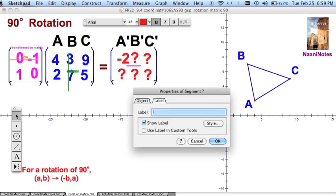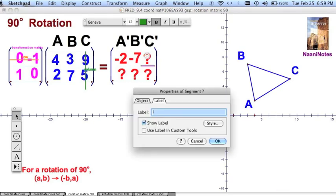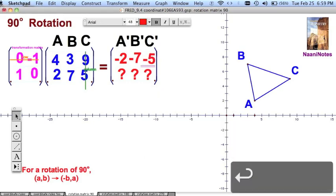And over here, the second, first row, second column, zero times three, negative one times seven. Well, that's going to be negative seven. I'm getting the hang of this. And finally, the last one, zero times nine, negative one times five. That's going to be negative five. Just click on these, and you can change the numbers.